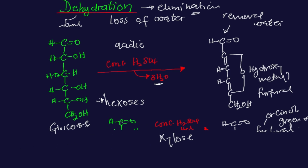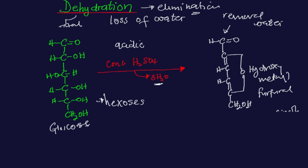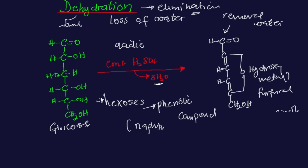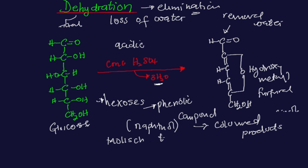In the case of glucose, whenever glucose undergoes dehydration, hydroxymethyl furfural is the product. One thing about this hydroxymethyl furfural is that it can react with phenolic compounds. Phenolic compounds are any compounds that contain phenol groups — for example, alpha-naphthol. This furfural can react with alpha-naphthol to form colored products. The colored product formed is well explained in Molisch's test — I'm going to release a video on Molisch's test to explain everything about how furfural reacts with alpha-naphthol to form a colored product.